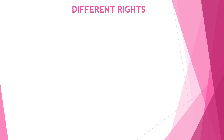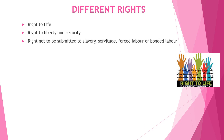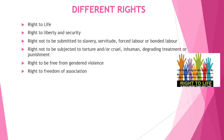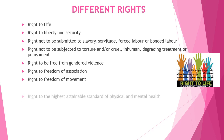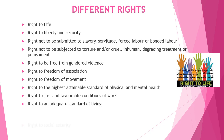Here are the different rights under human rights: right to life; right to liberty and security; right not to be subjected to slavery, servitude, forced labor or bonded labor; right not to be subjected to torture or cruel, inhuman, degrading treatment or punishment; right to be free from gendered violence; right to freedom of association; right to freedom of movement; right to the highest attainable standard of physical and mental health; right to just and favorable conditions of work; right to an adequate standard of living; right to social security; and right of children to special protection.